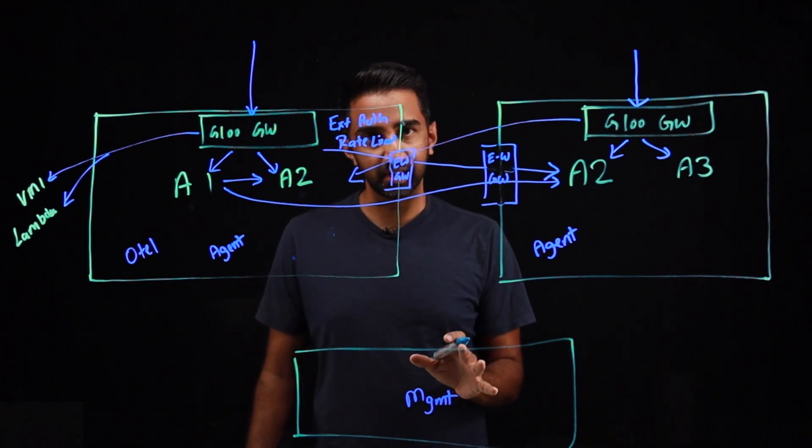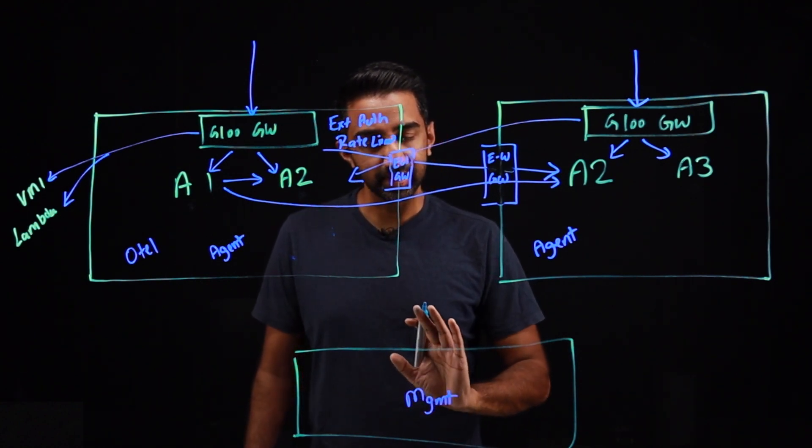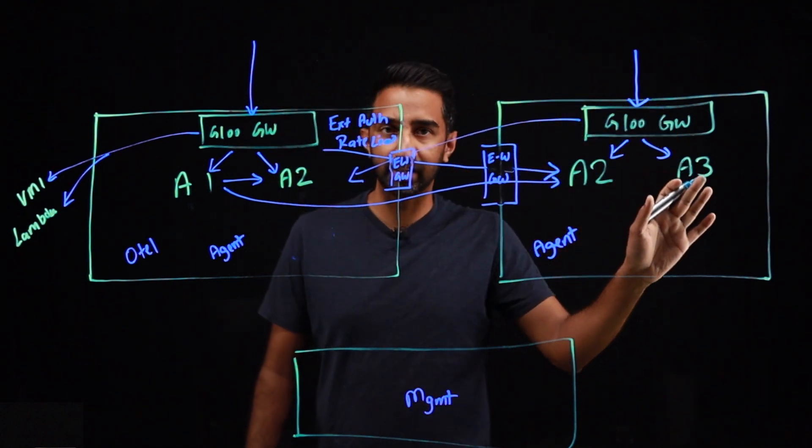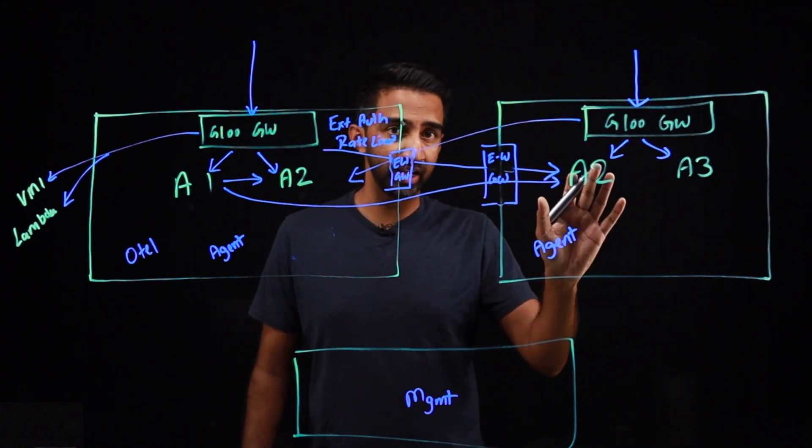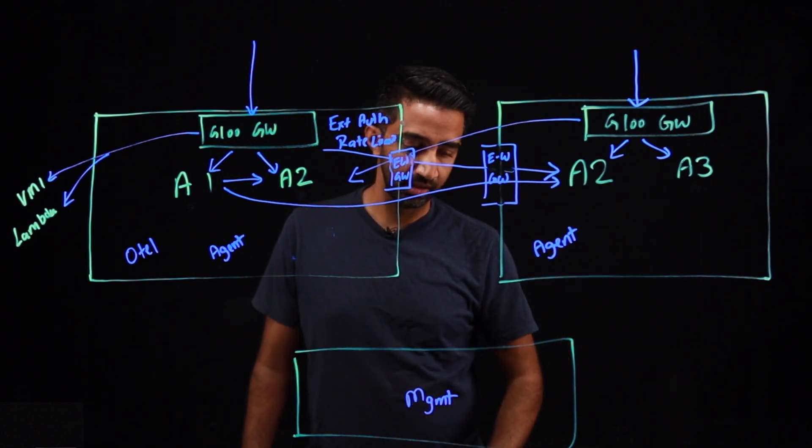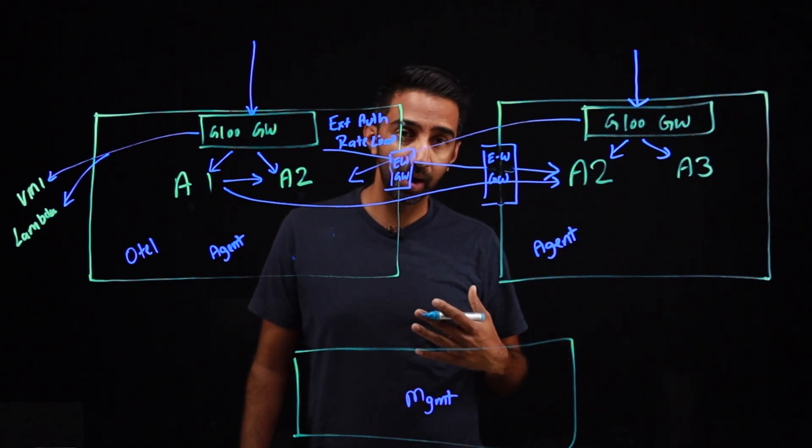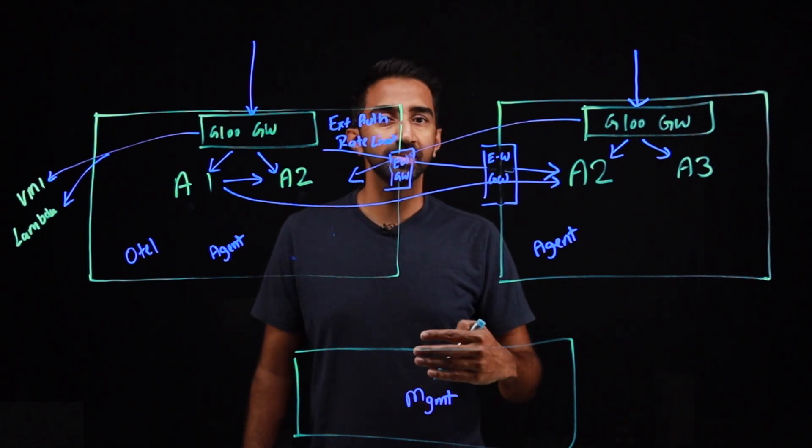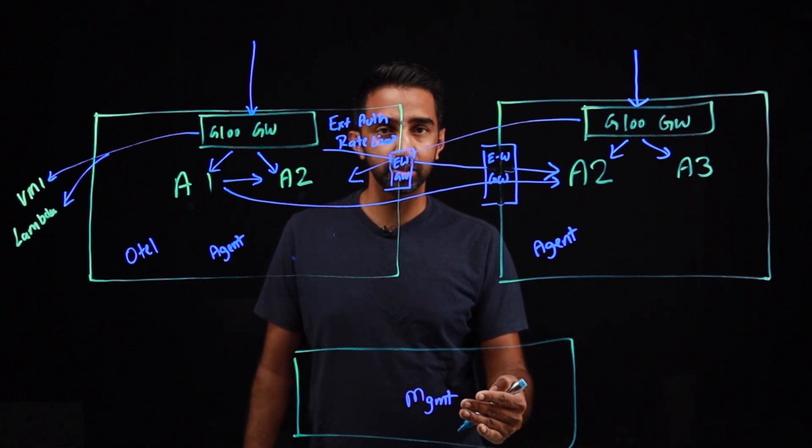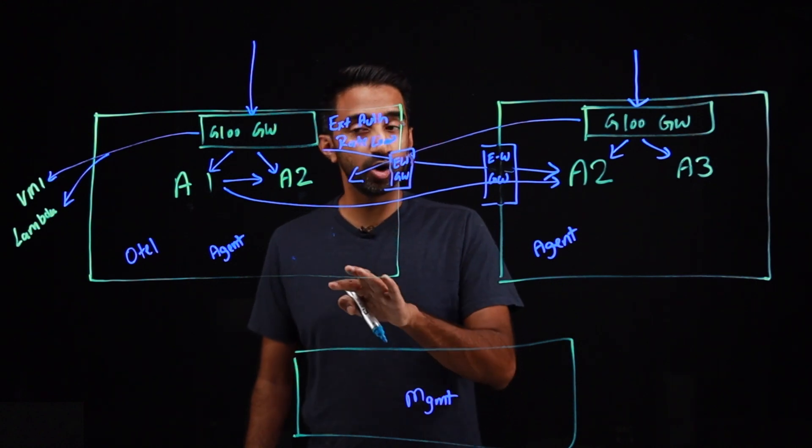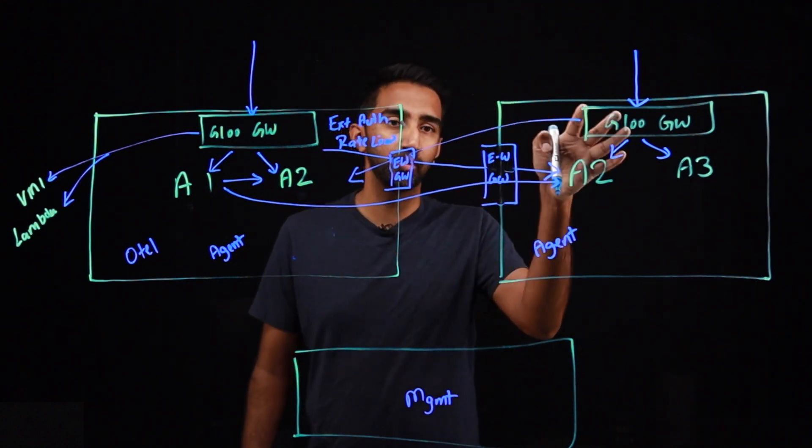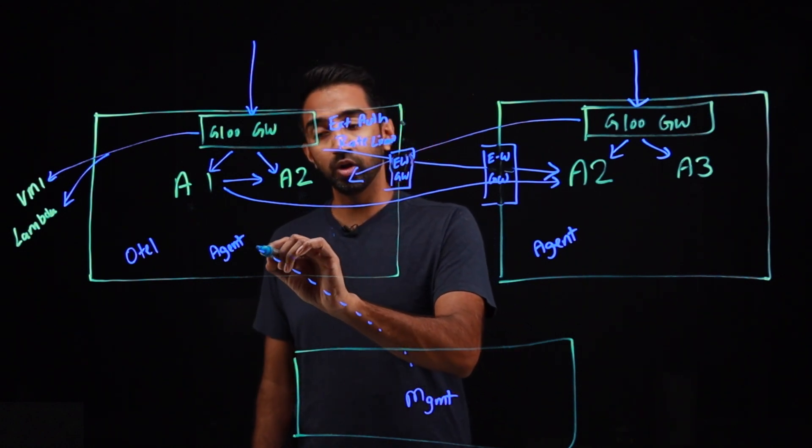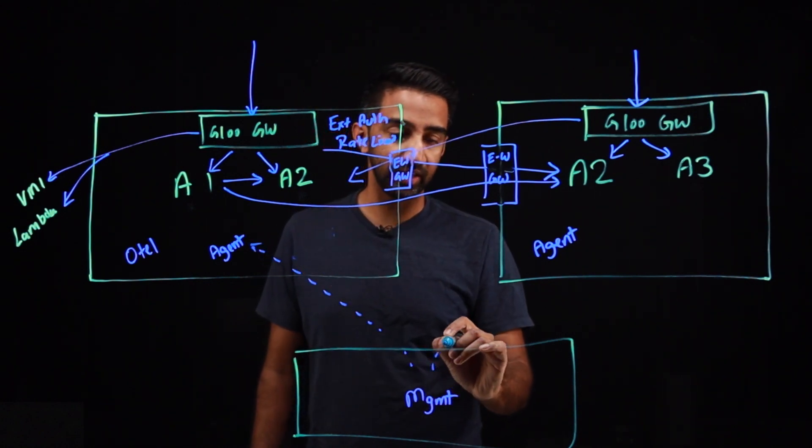What this gives us is gives you a central point to manage all of your service mesh, all of your north-south and east-west traffic communication policies from a central place. So as an operator, you apply your Glue routing policy, security policies, etc., to the management plane. And the management plane knows where all your workloads are and it knows where all your gateways are. And it's able to program all of those by talking to the agent.